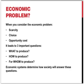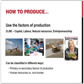Economic systems determine how society will answer these different questions. Production is all about the use of the factors of production to produce goods and services that consumers can use to satisfy their needs.